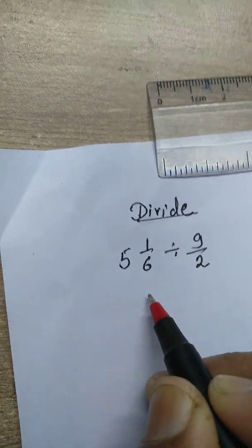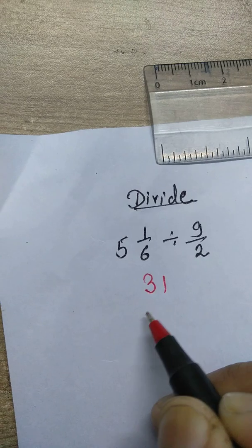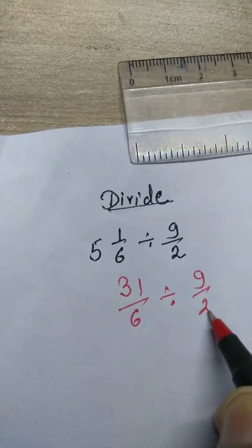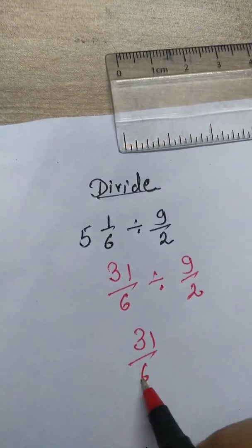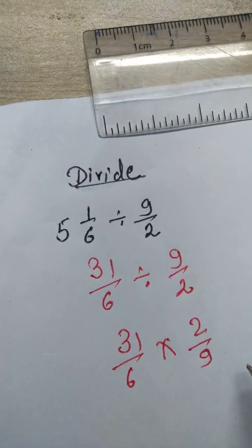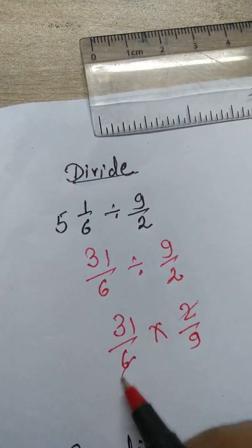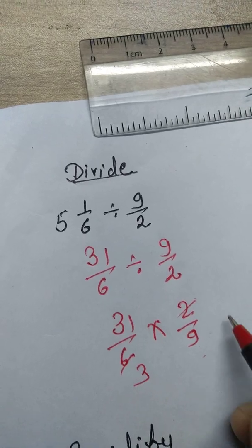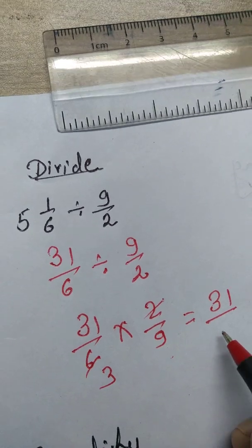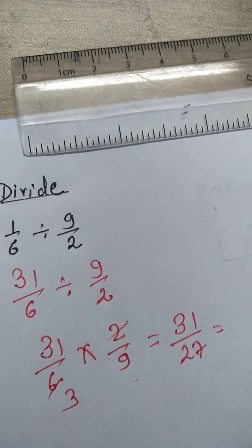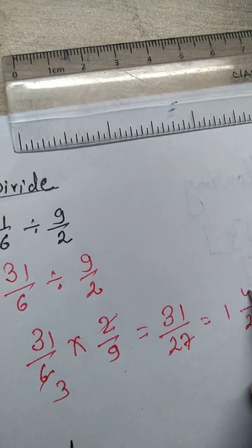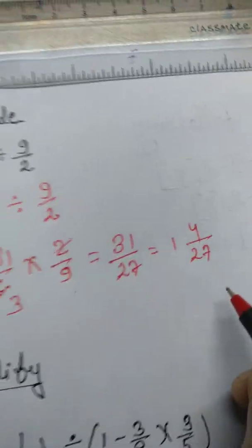Next division: 5 and 1 upon 6 divided by 9 upon 2. First convert: 5 times 6 is 30 plus 1 gives 31 upon 6, divided by 9 upon 2. Take reciprocal of right side: 31 upon 6 multiply 2 upon 9. After simplification, the answer is 1 and 4 upon 9.